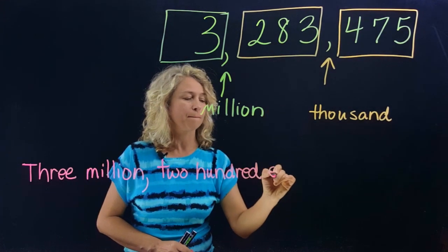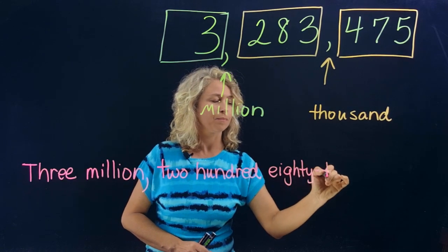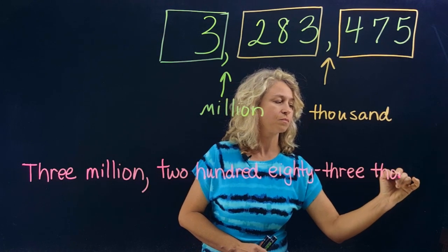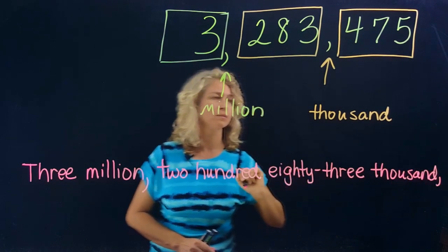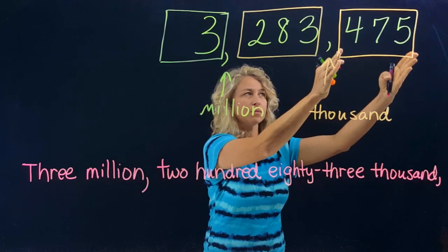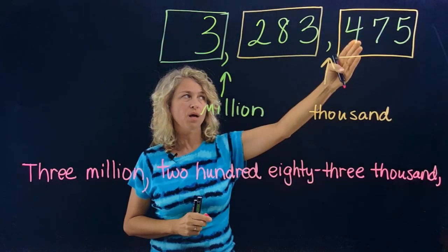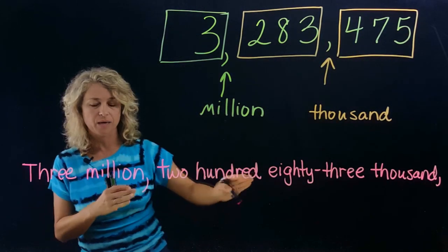Eighty-three, thousand. Place the comma. And now for the last group, which is the ones period, we need four hundred seventy-five, so I'm going to go down to the next line because I'm out of space.